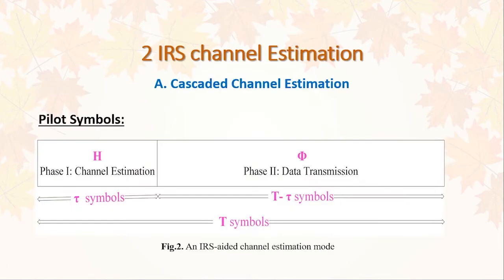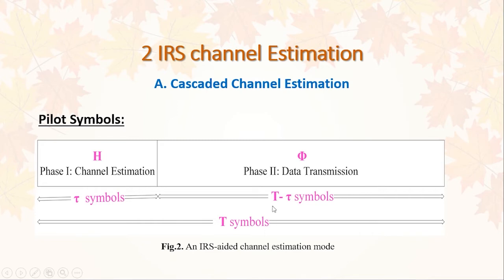The first method for IRS channel estimation is cascaded channel estimation, based on pilot symbols. During the channel coherence time T, with capital-T symbols, the IRS operates in two phases. The first phase is the channel estimation phase: the user sends tau pilot symbols to the IRS, and IRS reflects them to the base station for channel estimation; the base station estimates the channel reflection matrix h. In the second phase, the data transmission phase, the base station designs the passive beamforming phi to adjust the IRS, and on the remaining T-minus-tau symbols, the user sends their data.